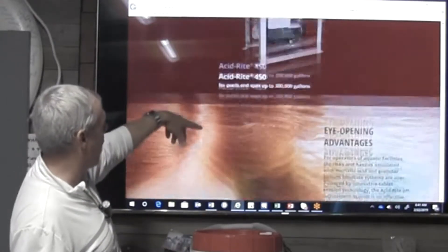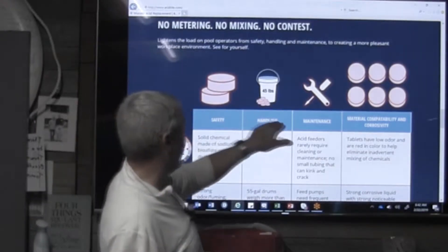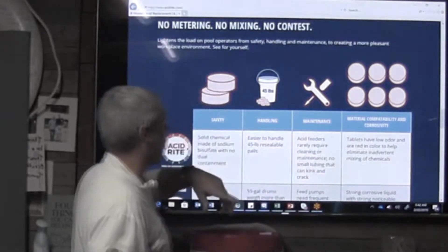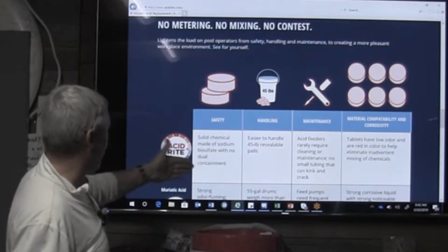So if we go down to their chart, it kind of tells you a little bit about the product itself. You got some safety, some handling, maintenance and material compatibility and corrosivity.